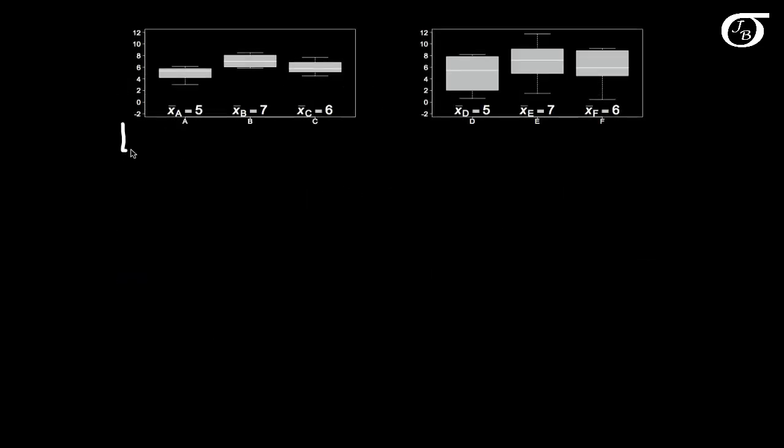If we take a look at this plot on the left for a moment, we'll see these three different box plots corresponding to these three different samples. And we can see that the sample means are 5, 7, and 6. So there is some variability between these sample means.